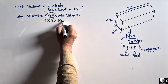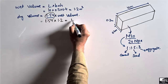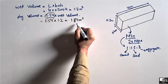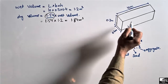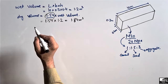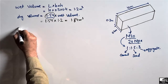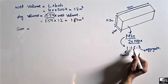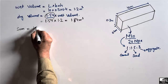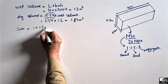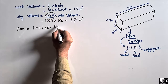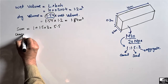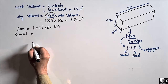So the dry volume is equal to 1.54 multiplied by the wet volume of 1.2, which comes out to be 1.848 cubic meters. This is the dry volume of the concrete used in this beam. Now to find each material quantity, we sum up the ratio: 1 + 1.5 + 3 = 5.5.